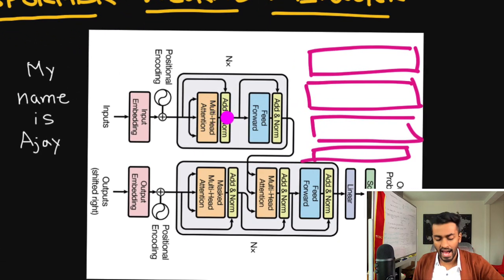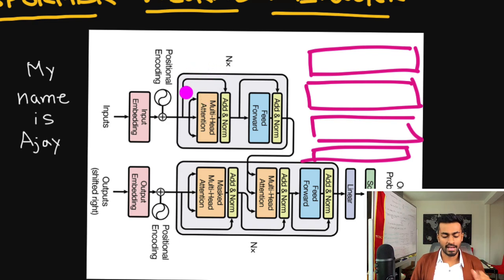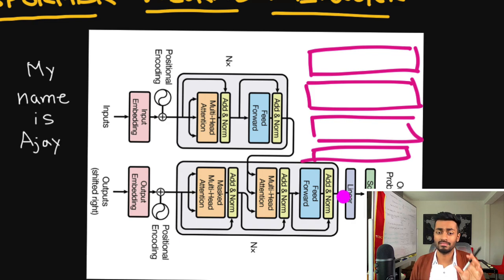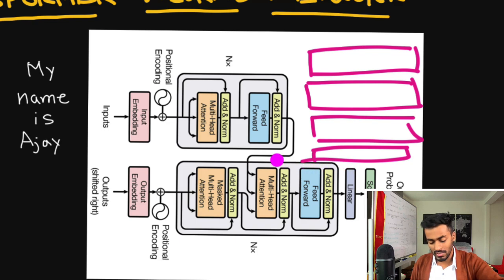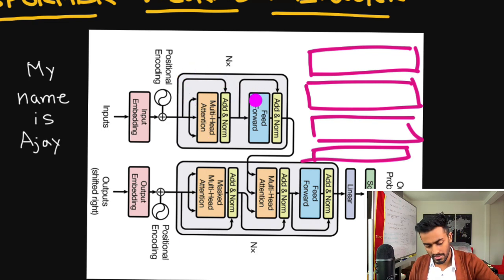The next step is add-and-normalize. We add the multi-head attention output to a residual (skip) connection, then perform layer normalization. Residual connections exist because in very deep networks, backpropagation can lead to very small gradients — activations like ReLU, GeLU, or ELU can produce near-zero values, and taking gradients of those makes them even smaller. As we go further back in a deep network, gradients can approach zero, causing parameters to stop updating. Residual connections prevent this problem.